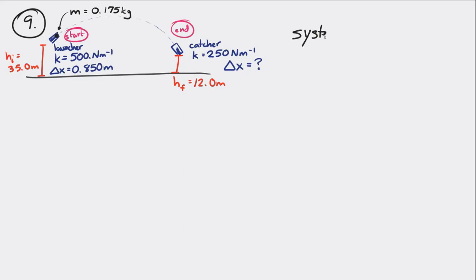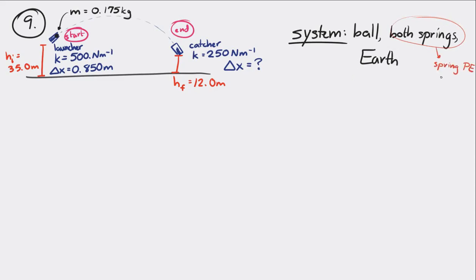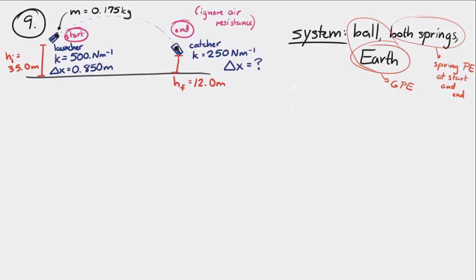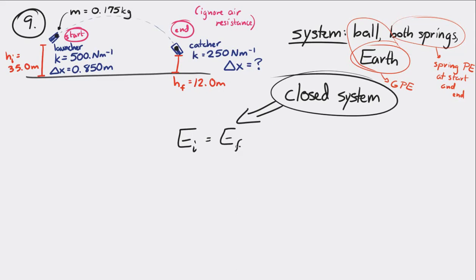If we make the system the ball being launched, the two springs, and the Earth, we'll be able to include the spring potential energy at the beginning and end, and the gravitational potential energy. Nothing else is adding or removing energy — ignoring air resistance, it's a closed system. So the total energy at the beginning equals the total energy at the end.